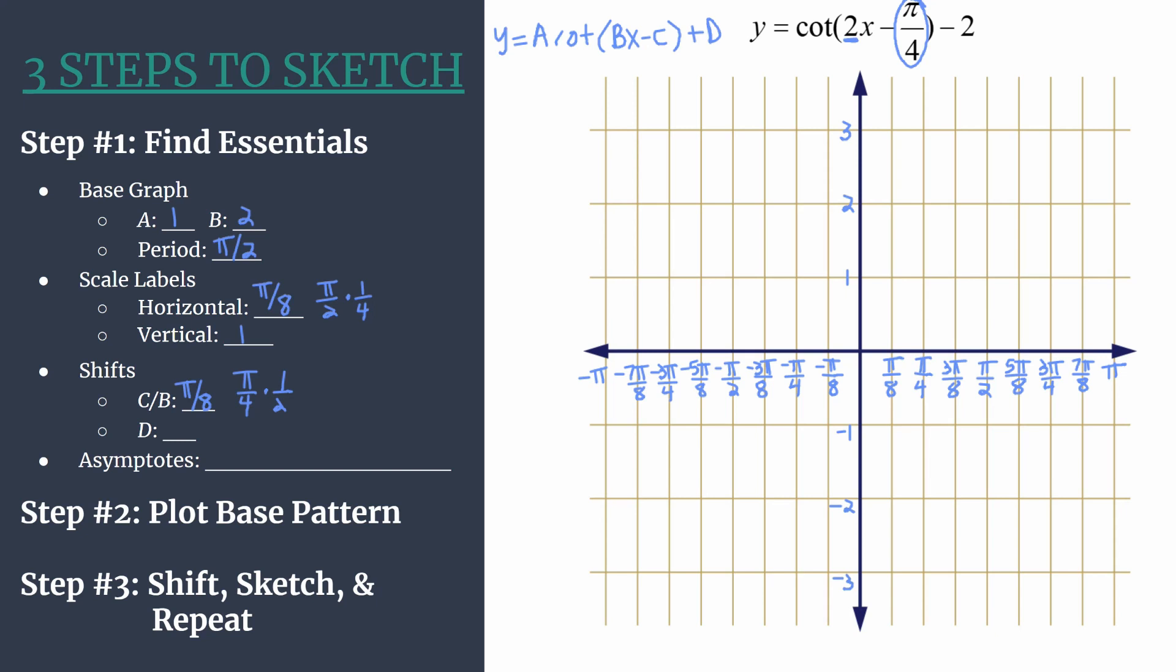Now for D, D is just our vertical shift. We look right out here, it's kind of tacked on at the end. It's negative 2, which means we're going to be moving down 2 grid units. So right π over 8 and down 2, those are our shifts for this equation.